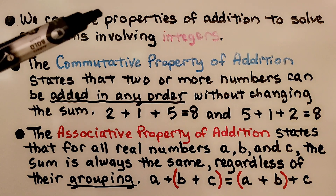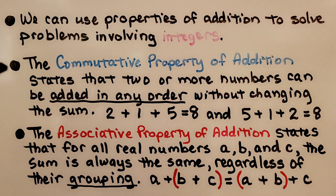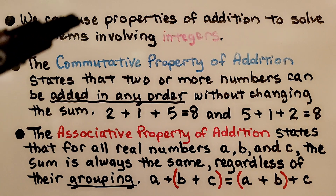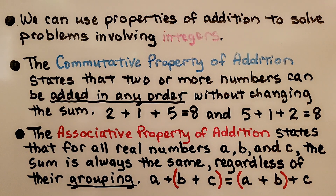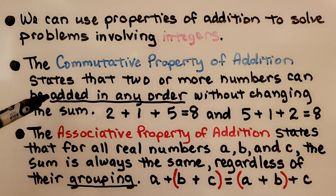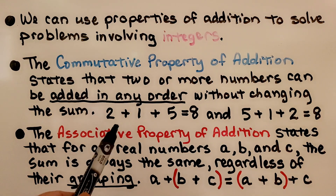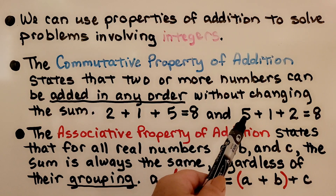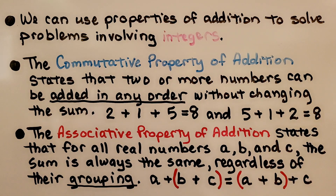The properties of addition include the commutative property and the associative property. The commutative property of addition states that two or more numbers can be added in any order without changing the sum. So we can add 2 plus 1 plus 5 and that equals 8, or we can add 5 plus 1 plus 2 and that equals 8. The order doesn't matter for addition.